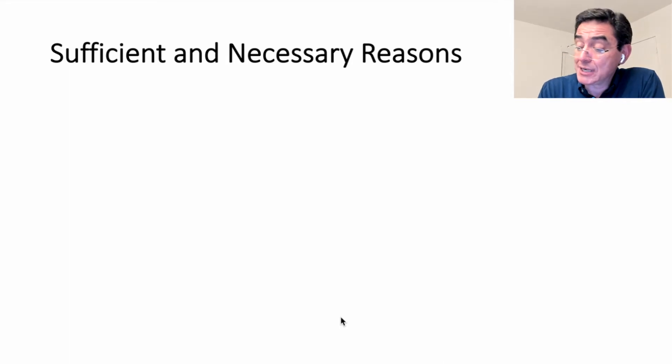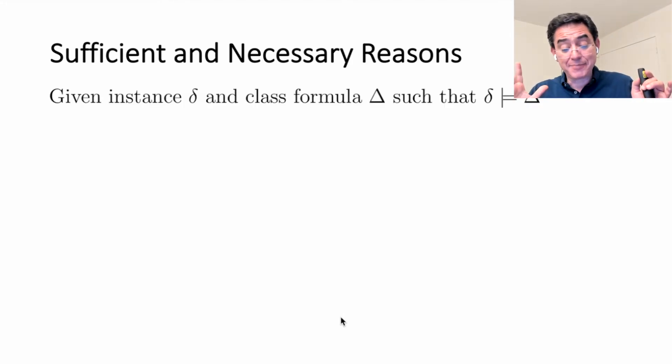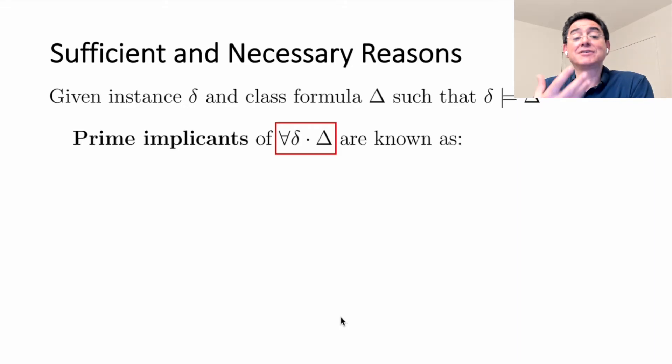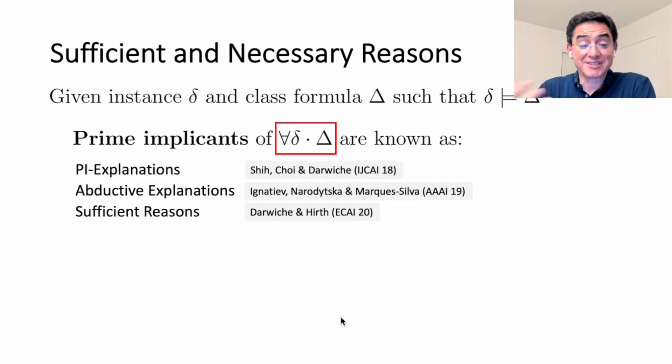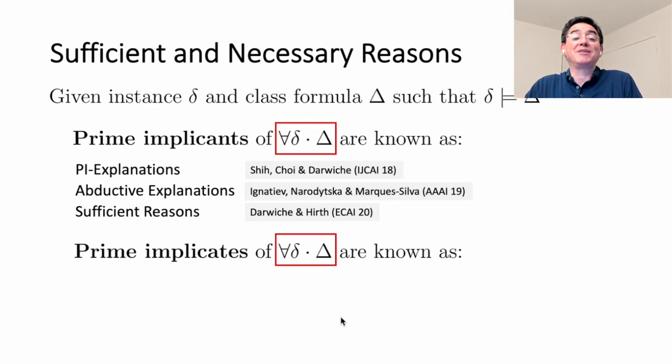The ability to capture the complete reason using quantification is pretty important because of its connection to other notions. Suppose you have a class that's represented by a formula delta and consider an instance that belongs to this class. What we know now is the prime implicants of this quantified Boolean formula, which represents the complete reason. These prime implicants correspond to what people have been studying over the last few years under the label of PI explanations, abductive explanations, and sufficient reasons.